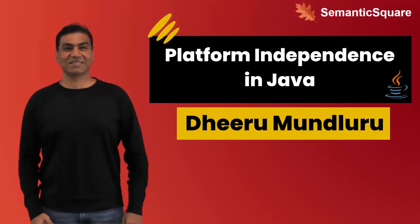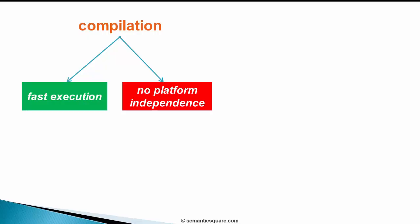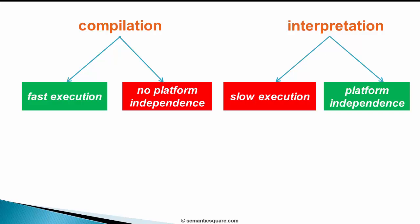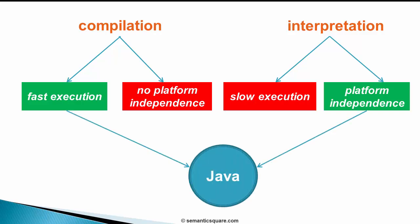Hello there, this is Dirimundaluru and welcome back. Now let's see how Java achieves platform independence without affecting execution speed. We discussed compilation and interpretation, which offer contrasting benefits and limitations. With compilation we get fast execution speed but without platform independence, and with interpretation we get platform independence but with much slower execution speed. With Java, we get the best of both.